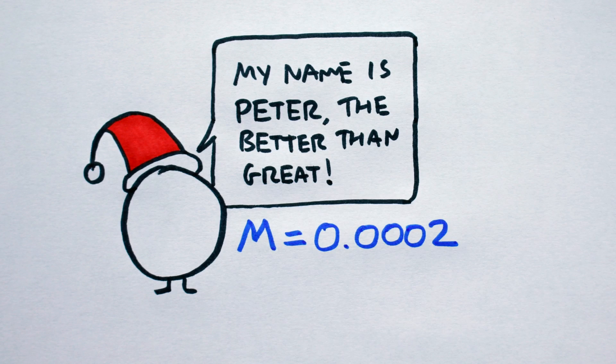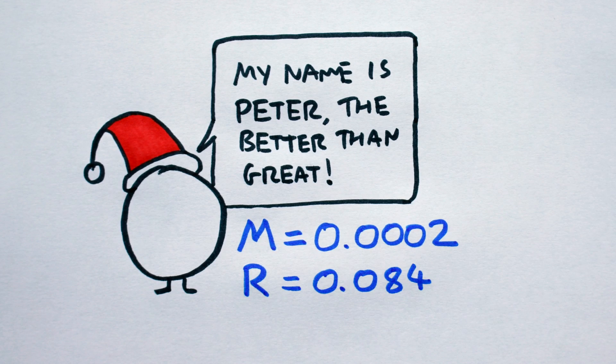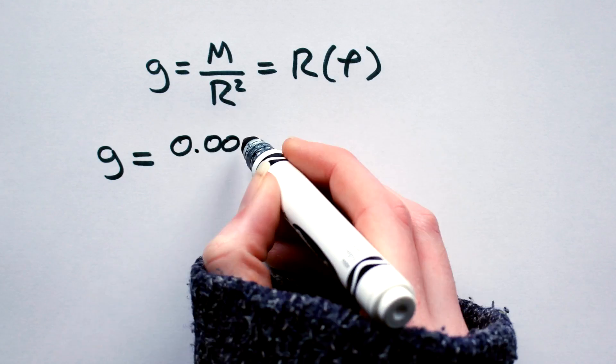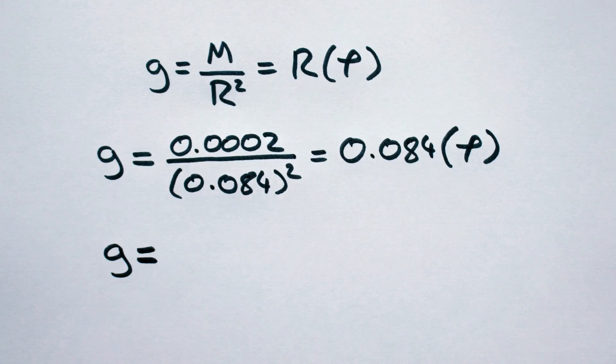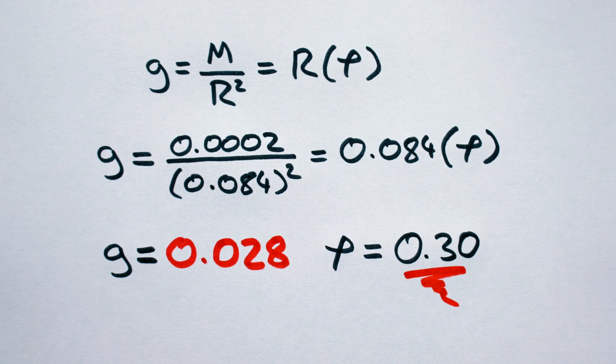Let's give him a mass of 0.0002 Earth masses and a radius of 0.084. After a bit of number crunching, Peter turns out to have a surface gravity 0.028 times that of Earth's and a density of 0.3. And this is great!